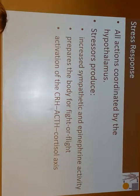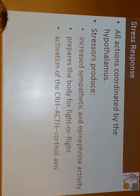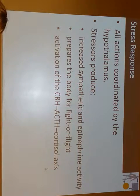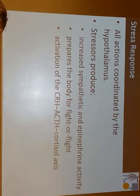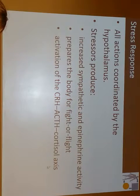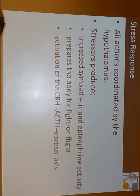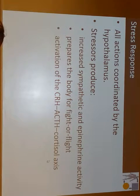CRH release, ACTH into cortisol - this is referred to as an axis, probably because of the feedback loops involved. Elevation of blood glucose and fatty acids, and glucagon to keep your glucose levels high. To do that, when glucose is high, you also have to shut off insulin.